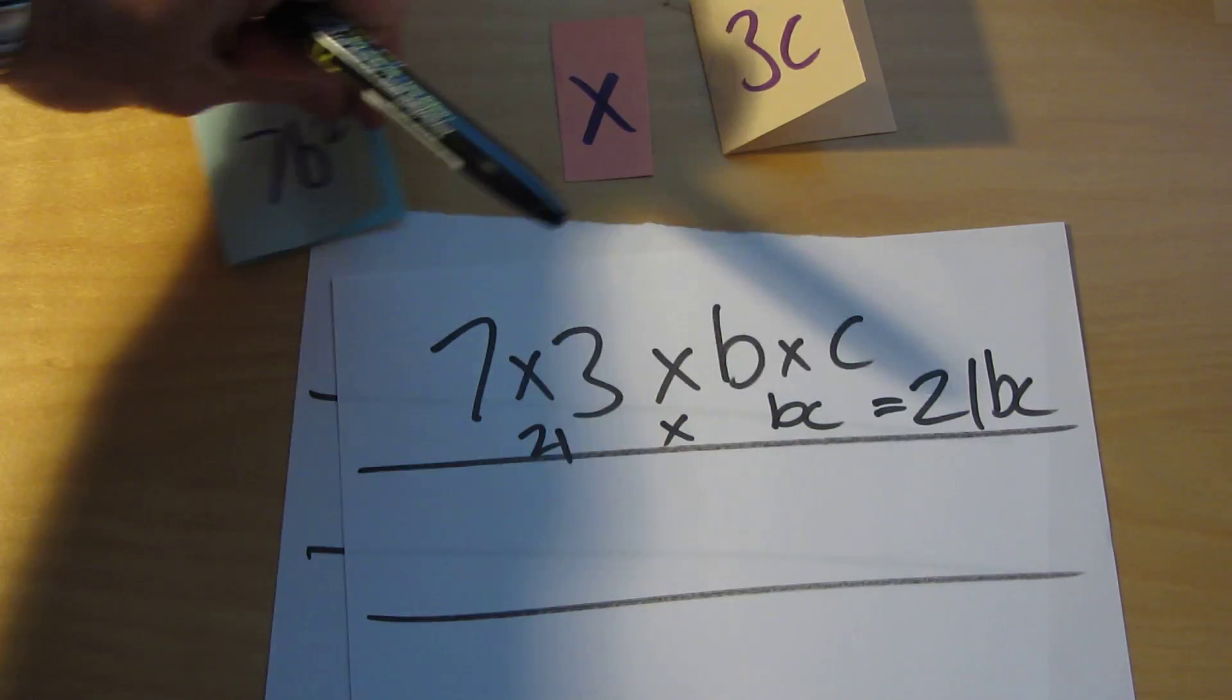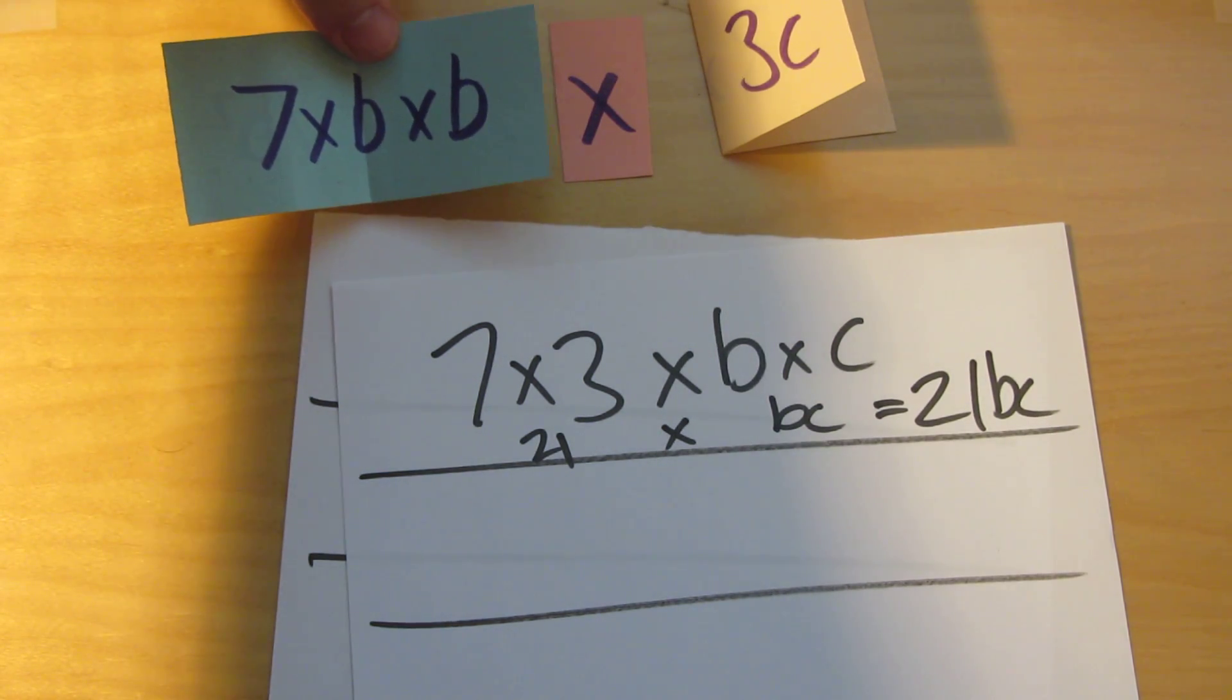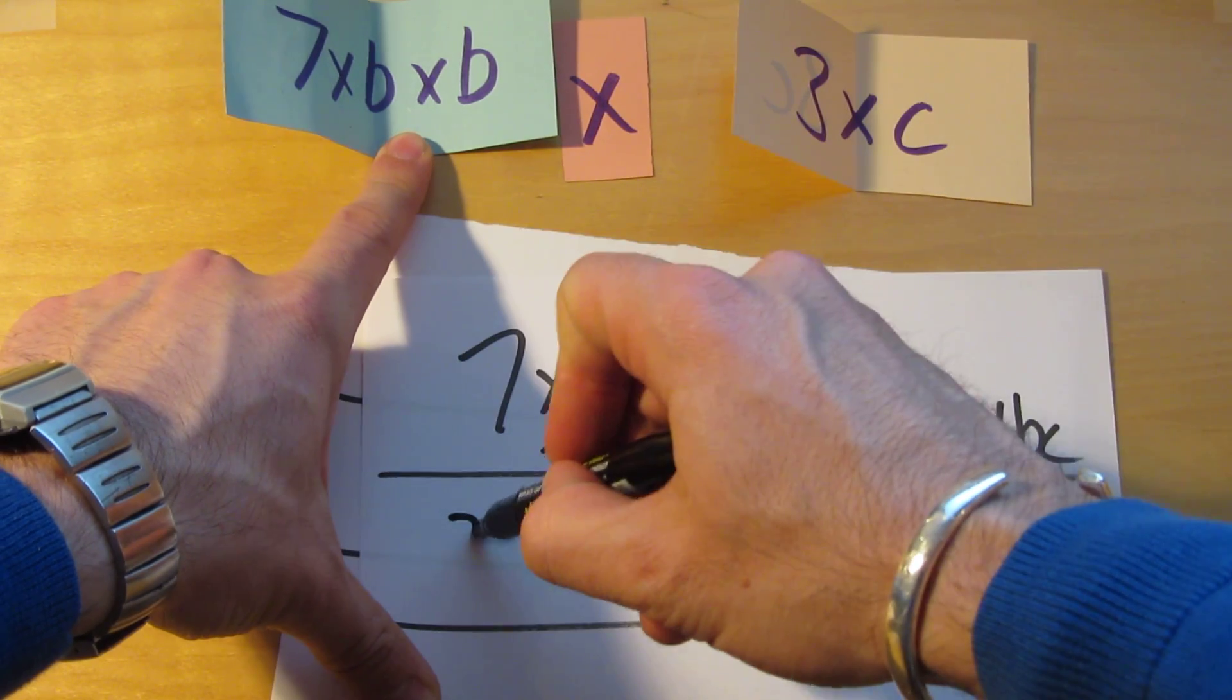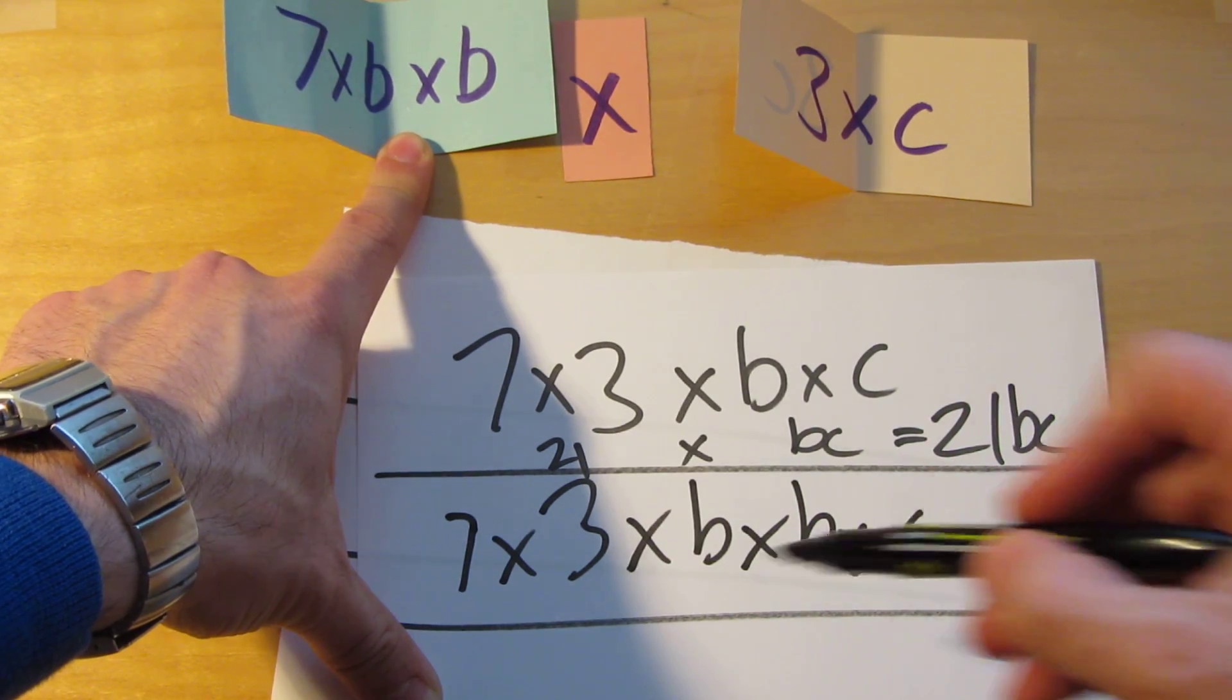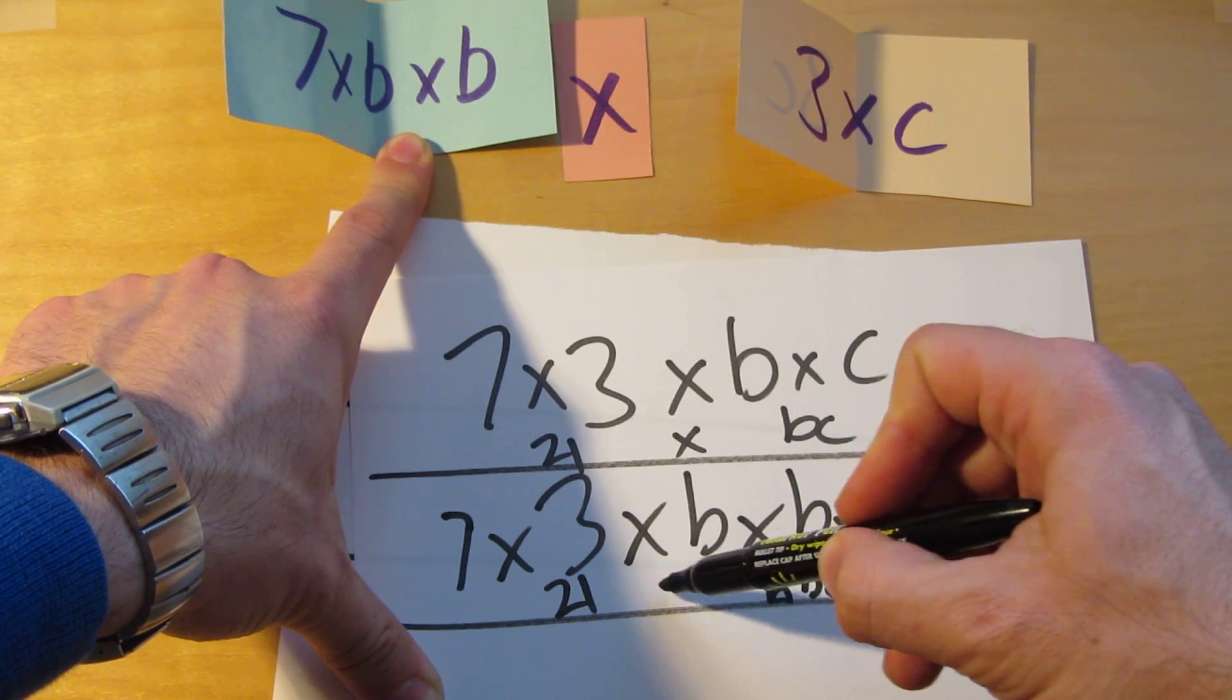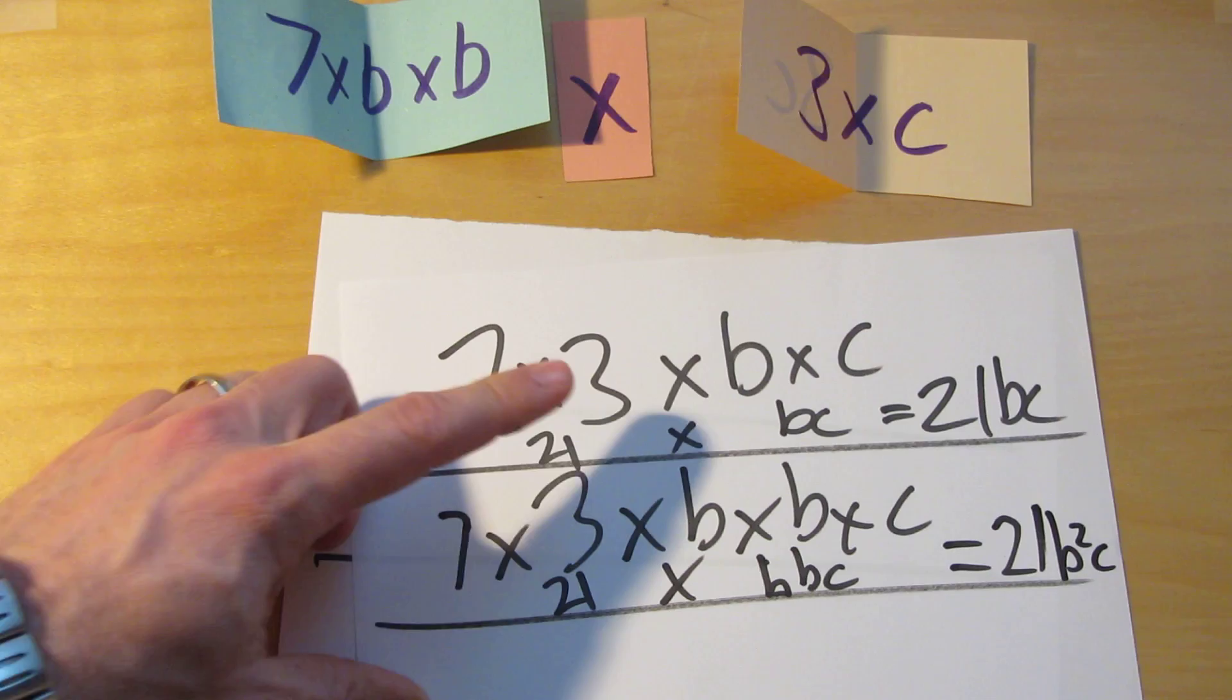Okay so that was 7b times 3c. How about 7b squared times 3c. So rearrange that. So we've got the numbers together. We've got 7 times 3 times b times b times c. That bit's 21. This bit b times b times c is bbc. And then we've got to times that by 21. Well not bbc, but b squared. That would be better wouldn't it. 21b squared c.